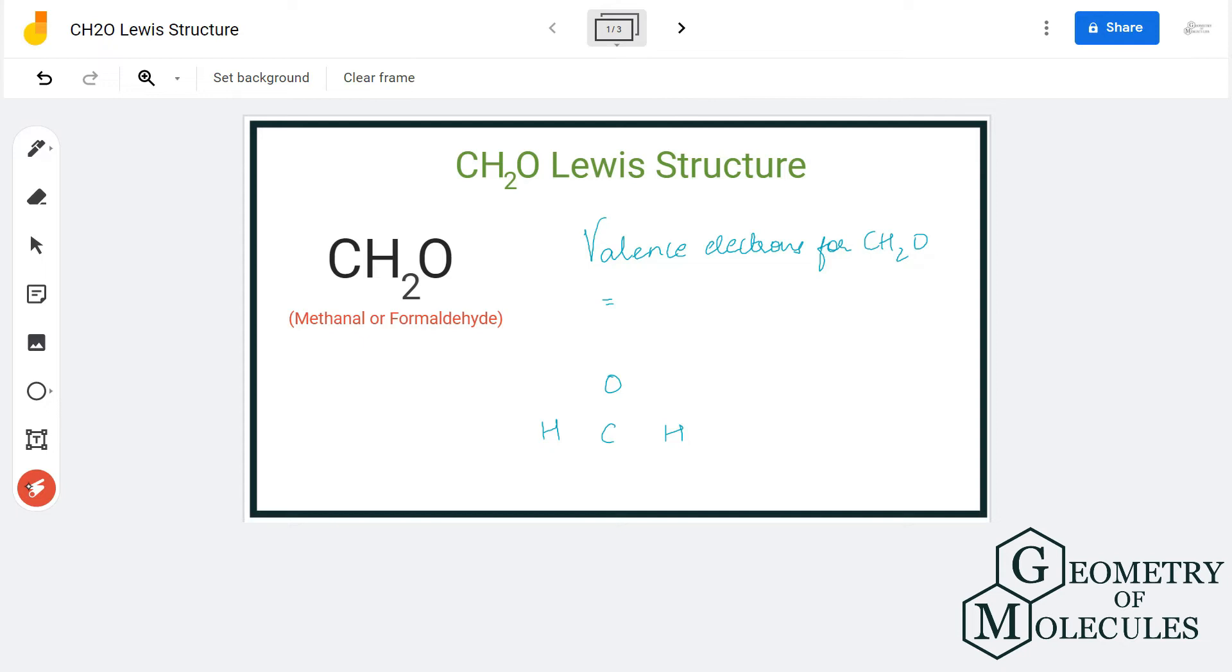Hi guys, today in this video we are going to look at the Lewis structure for CH2O molecule. It's the chemical formula for methanol and is also known as formaldehyde. To understand the Lewis structure, we will first look at the total number of valence electrons for this molecule.